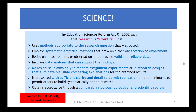The Education Sciences Reform Act of 2022 says that research is scientific if it uses methods appropriate to the research question posed — different questions require different methods. It must employ systematic empirical methods that draw on observation or experiment; you have to actually observe and do some experimentation. It relies on measurements that provide valid and reliable data, involves data analyses that can support the findings, and — importantly — obtains acceptance through a comparably rigorous, objective, and scientific review. It's never just 'we did this study,' but other people actually looked at it and said yes, this seems rigorous and good.